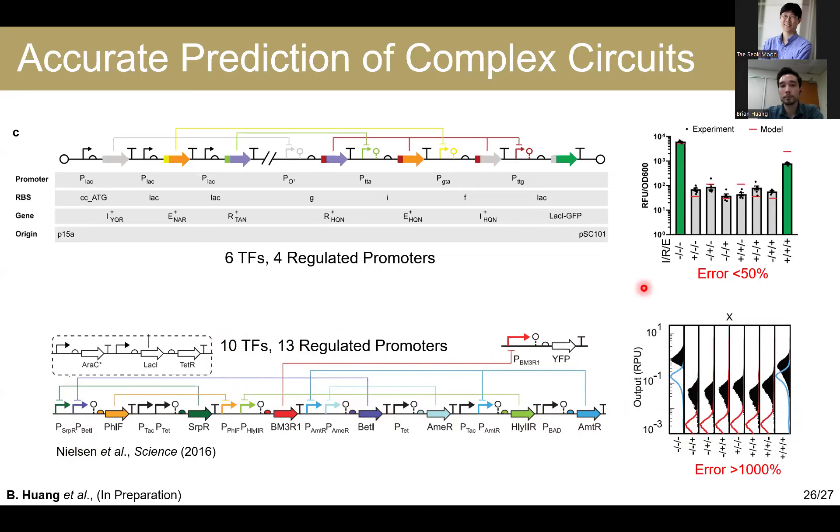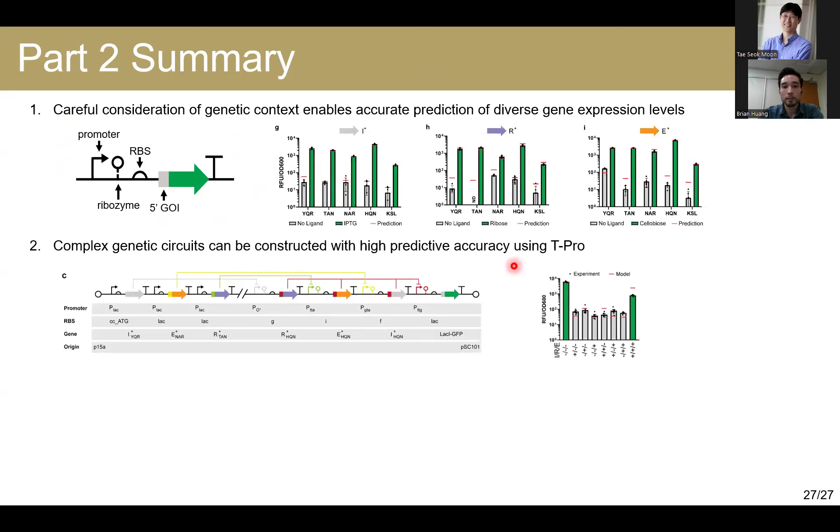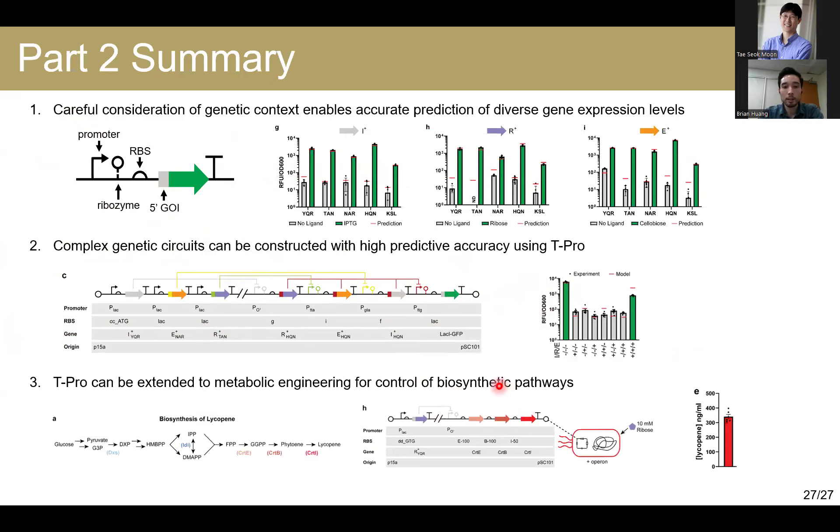Really just to test the limits and show that we can apply this to three input systems, we essentially mined the literature for the most difficult circuit that's been constructed to date, which turns out to be the three input XNOR or consensus circuit. Using our new workflow for predictive design, we generate this circuit topology, which requires six transcription factors and four regulated promoters to achieve our desired phenotype. When we test this circuit, our error is less than 50% on average, and we are recapitulating the phenotype that we're desiring. Now it's important to compare our advancement to the previous state of the art, which is Cello technology. This design was reported in their first publication many years ago, which required 10 transcription factors and 13 regulated promoters to achieve the same circuit. When we compare the states, the error is on the order of 1000% here.